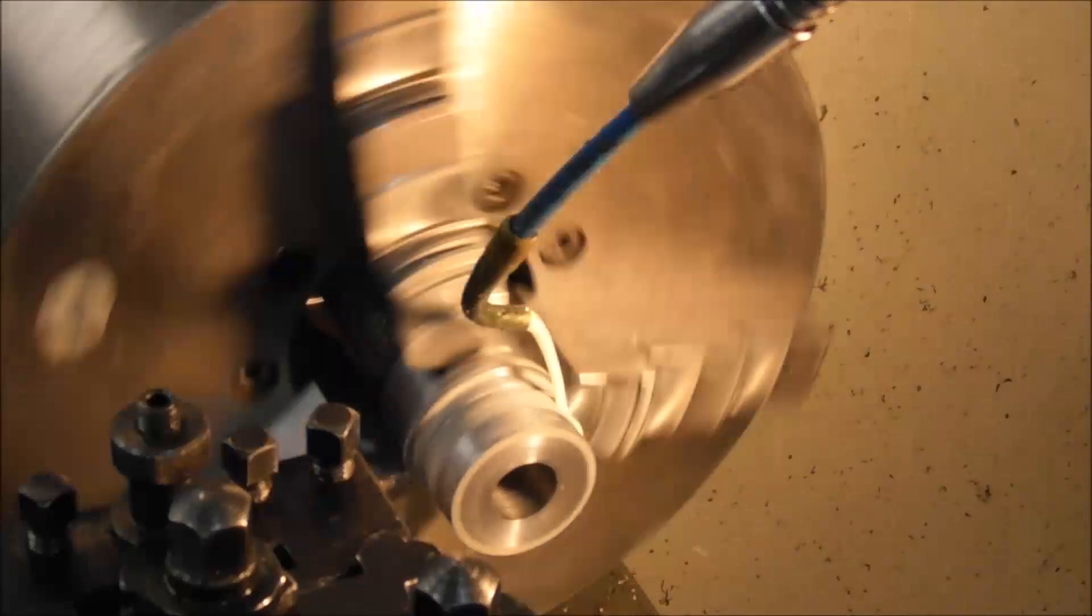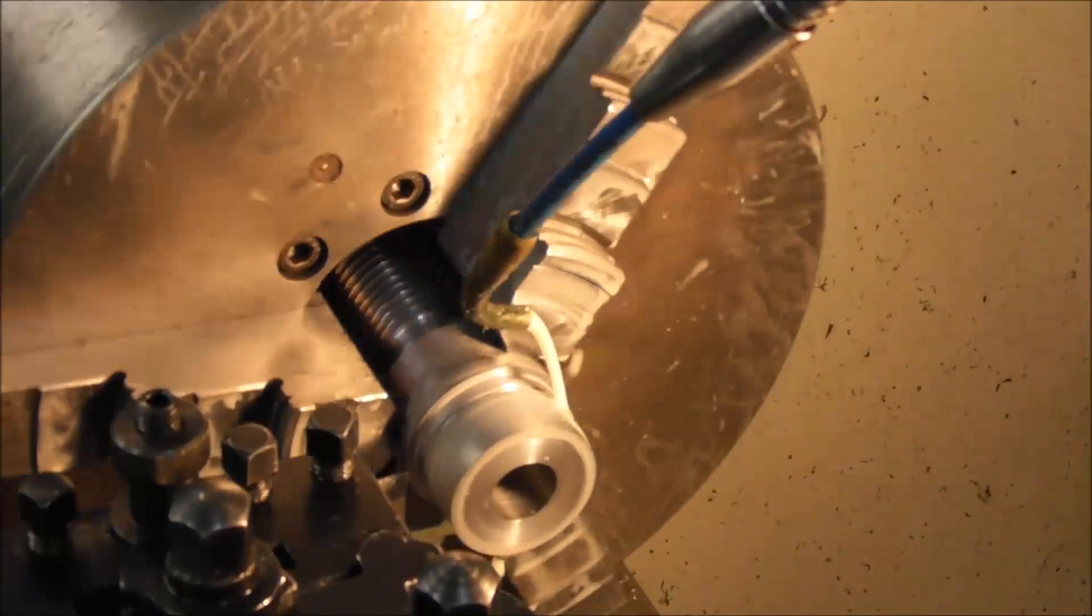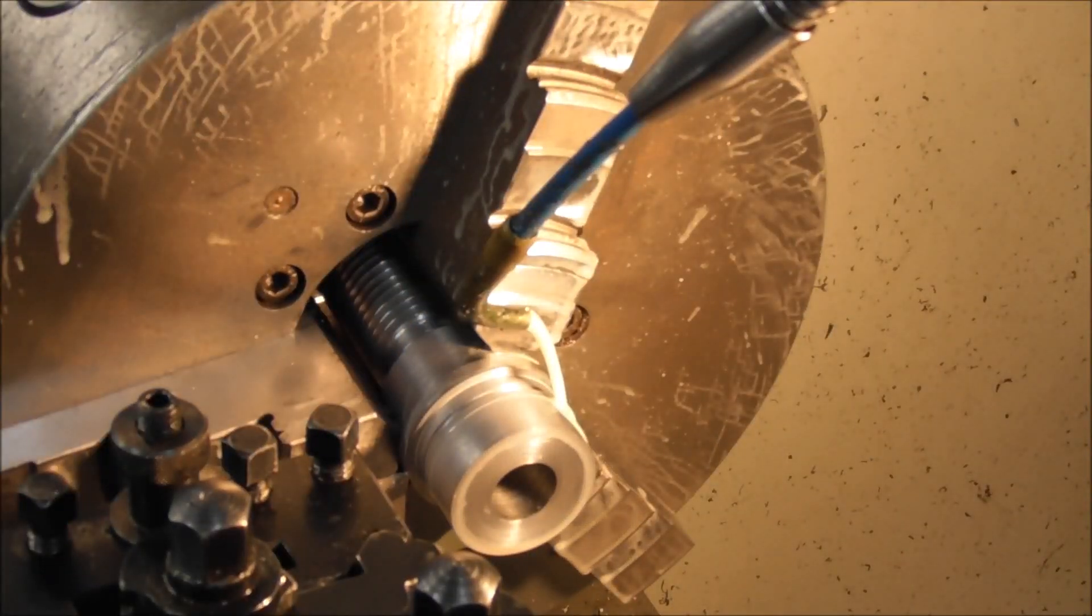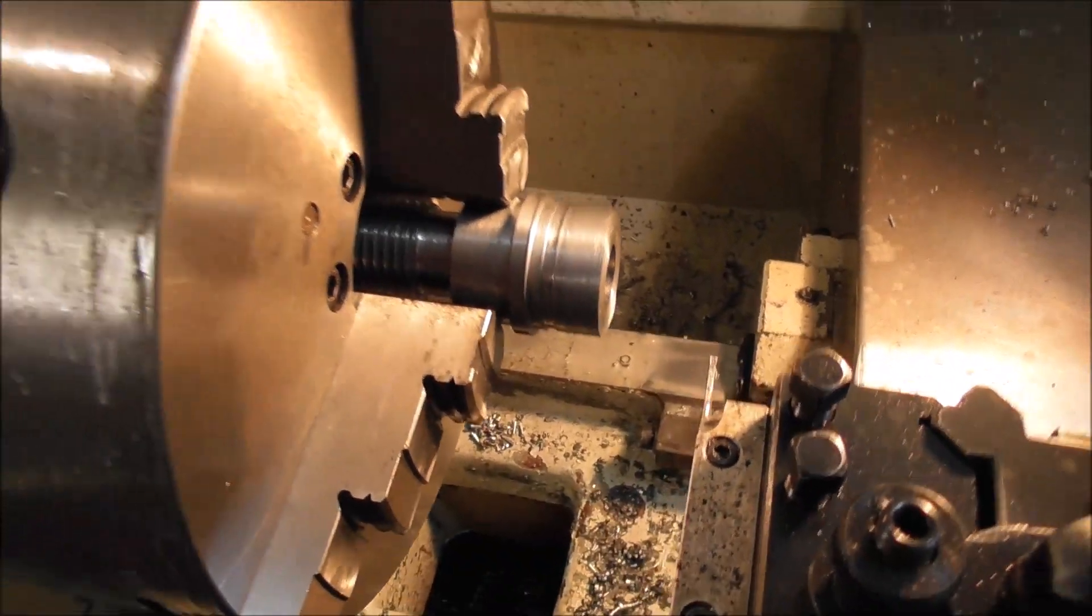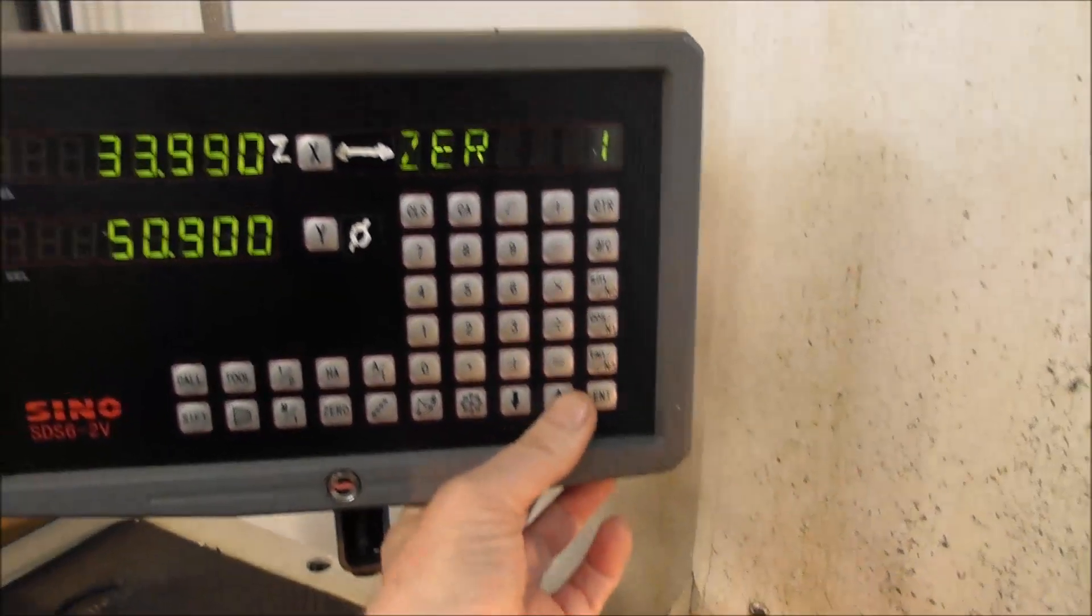And we've done our undercut. You can see that's quite a saving initially, but if you have to make multiple parts it's a huge saving. Horrible teary steel. Okay, so now we put in the next tool.